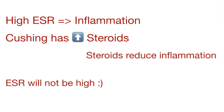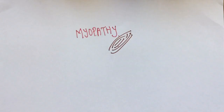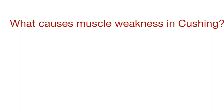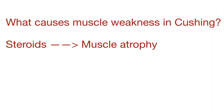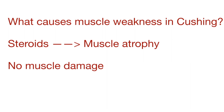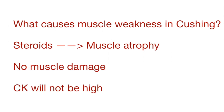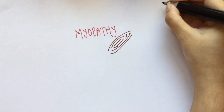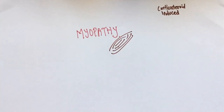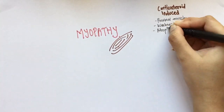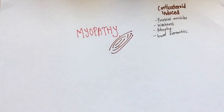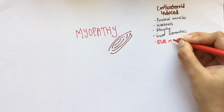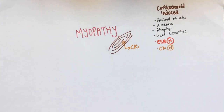In Cushing disease, the amount of corticosteroids are high. We know that steroids reduce inflammation, so ESR will not be high. The muscle weakness seen in patients with Cushing disease is because corticosteroids can cause atrophy of muscles, so there's no actual muscle damage — hence the level of creatinine kinase is also normal. These patients will present with proximal muscle weakness and atrophy, more likely involving the lower extremities, and both ESR and CK levels will be normal.